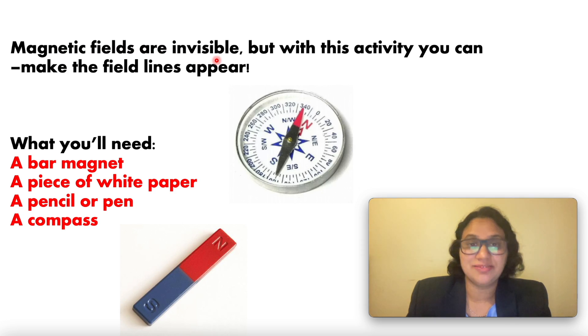Magnetic fields are invisible, but with this activity you can make the field lines appear. What do you need? A bar magnet, a piece of paper, a pencil or pen, and a compass.